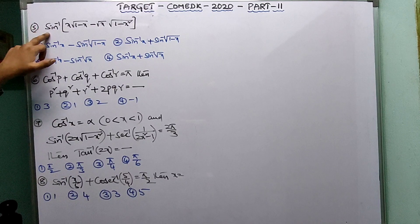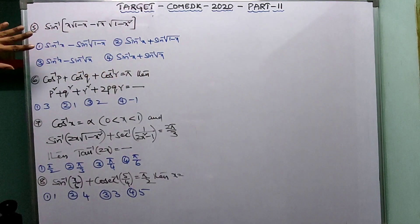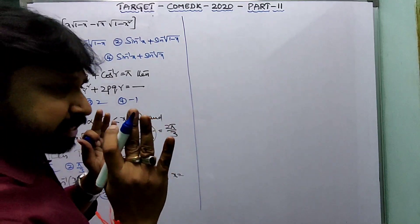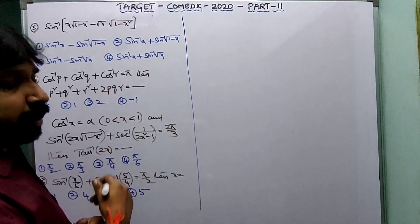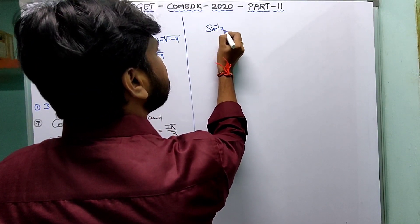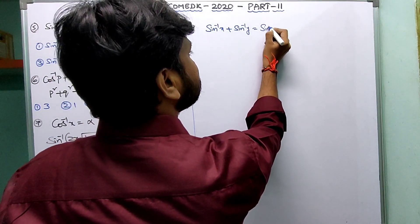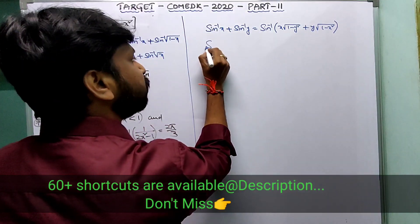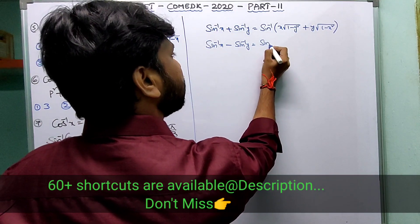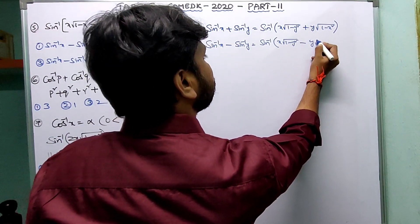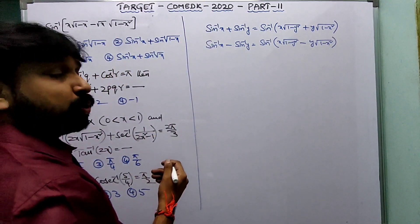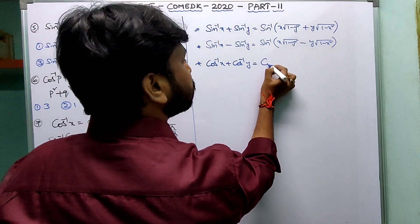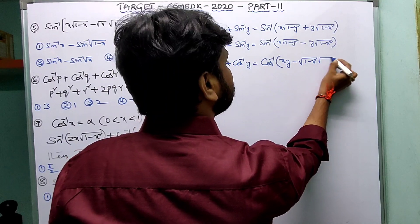Question 5: sin⁻¹(x·√(1-x) - √x·√(1-x²)). This is completely formula-based. The key formulas are: sin⁻¹x + sin⁻¹y = sin⁻¹(x·√(1-y²) + y·√(1-x²)), and sin⁻¹x - sin⁻¹y = sin⁻¹(x·√(1-y²) - y·√(1-x²)). Also note cos⁻¹x + cos⁻¹y = cos⁻¹(xy - √(1-x²)·√(1-y²)).